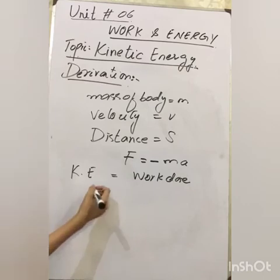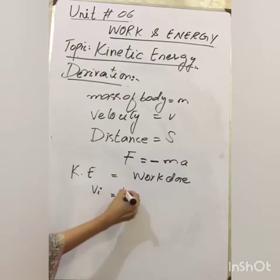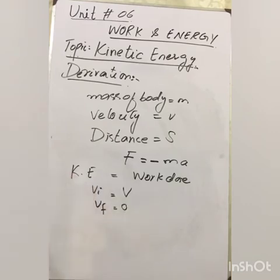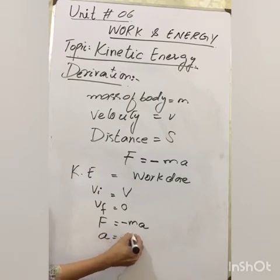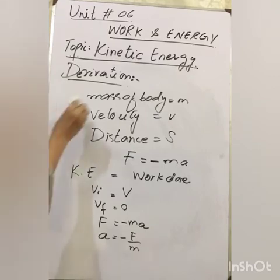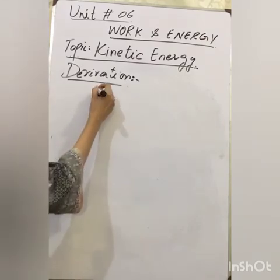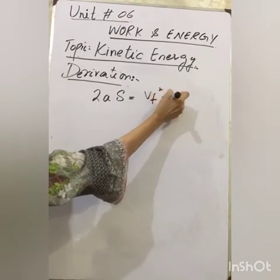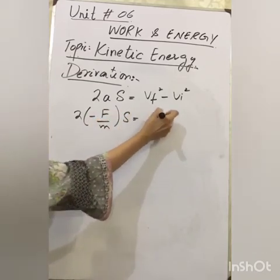The velocity from which the body is moving is the initial velocity v_i = v, and the final velocity v_f = 0 because the object is at rest. Force equals −ma, or acceleration equals −F/m. Using the third equation of motion: 2as = v_f² − v_i², with a = −F/m, v_f = 0, and v_i = v, we get: −2(F/m)·s = −v².